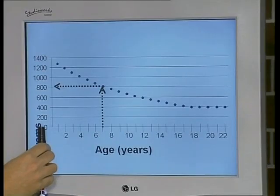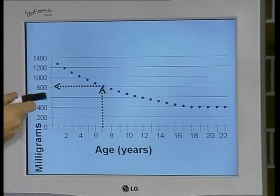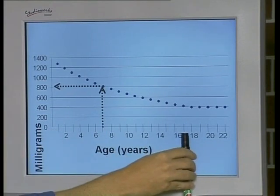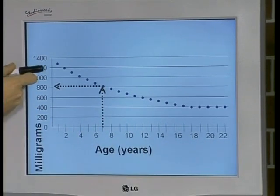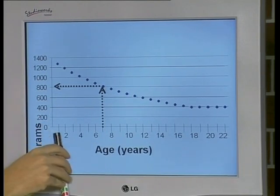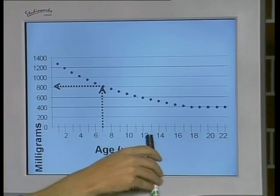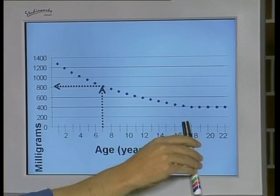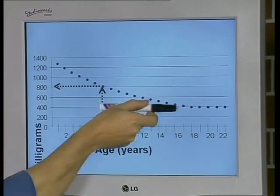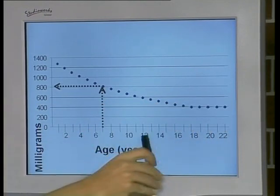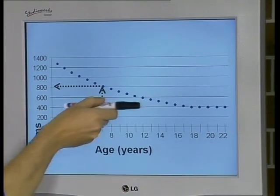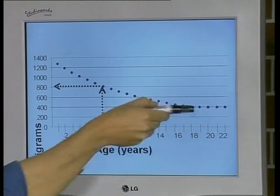We can see that for babies, they need a large number of milligrams of Vitamin AA. And for the ages of 1 to 18, we can see that the function is decreasing. So as you grow older, you tend to need less and less of Vitamin AA. From the age of 18, however, we can see that the function is constant. In other words, if you are 18 or 22 or even 72, you need the same number of milligrams of Vitamin AA.